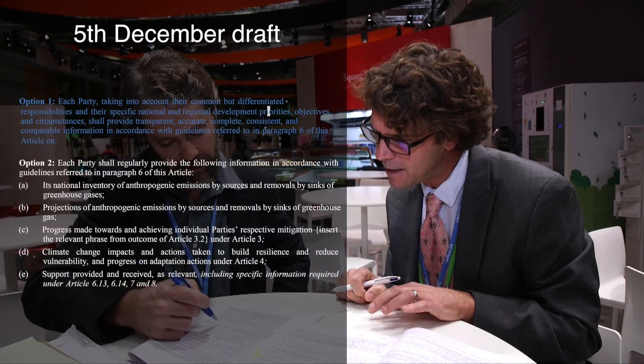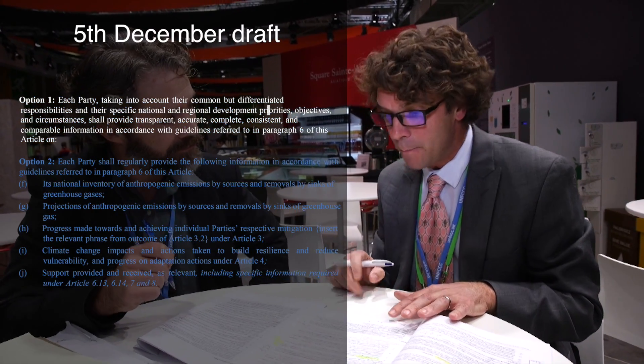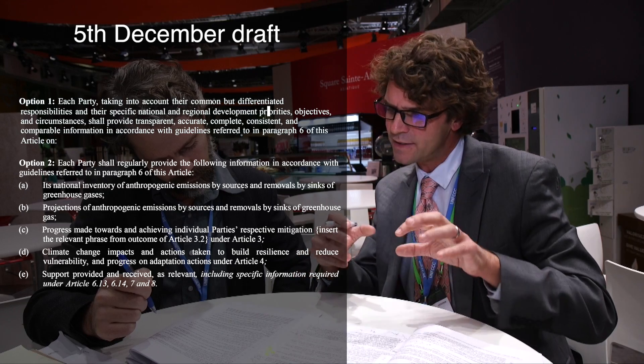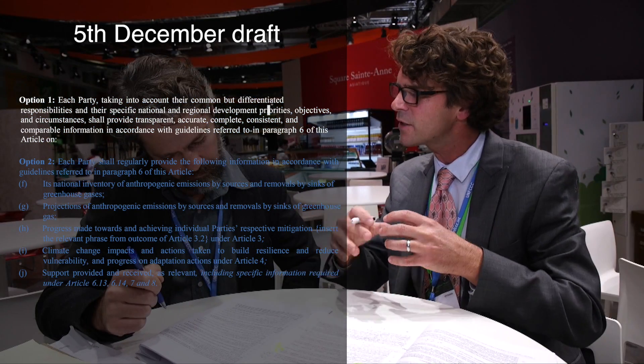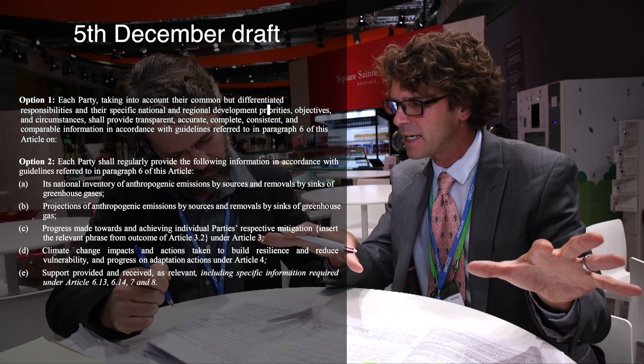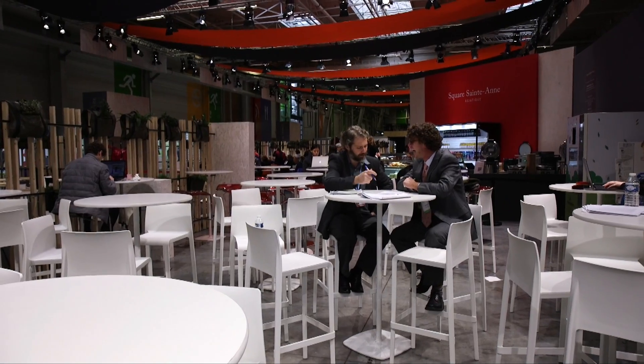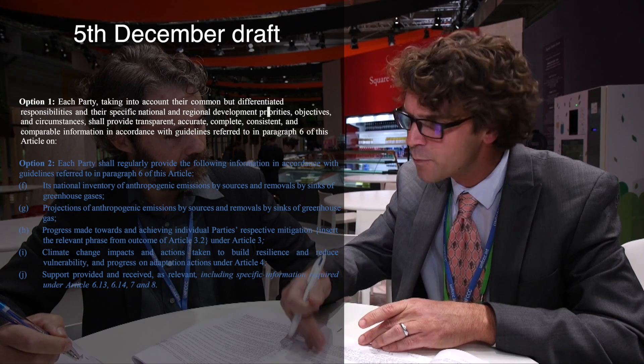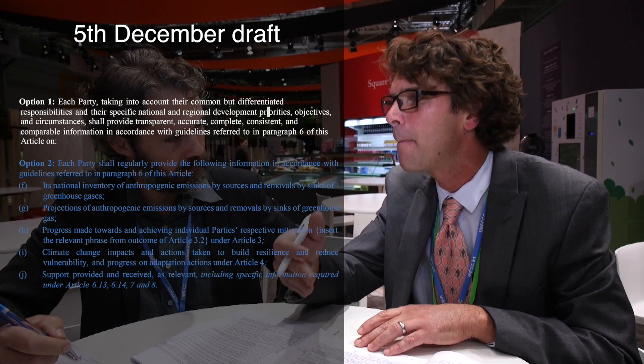This brings us to the options. We've got 'shall' in option one, but we do have an option two. So we can say this paragraph is currently not clean even though there are no brackets — we still have two competing options; they're just disagreeing about which overall direction to take on this topic. Option one gives a very simple statement that countries are going to report. Option two actually goes into a few more details — countries shall report, and this is where the language and the minutia of options and brackets becomes really important.